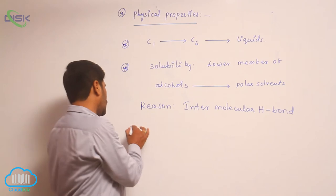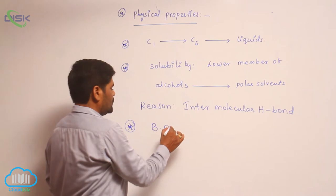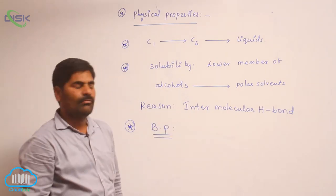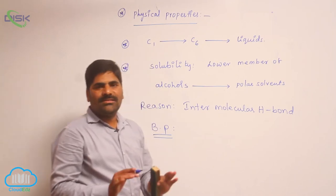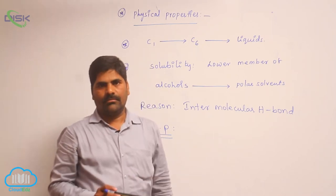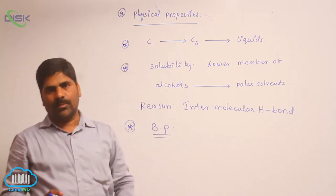Now, boiling points. Boiling points of alcohols. Alcohols and ethers are isomeric to each other. Both are functional isomers.